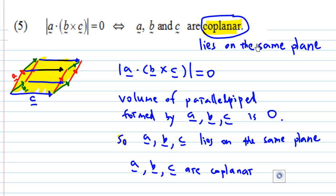This will happen when a · (b × c) = 0, and it basically means the volume of the parallelepiped formed by a, b, c is 0, where the parallelepiped is a 3D object shown on the left-hand side.